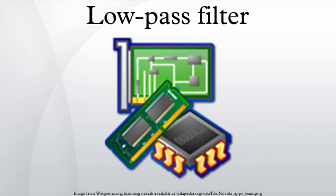An optical filter can correctly be called a low-pass filter, but conventionally is called a long-pass filter, to avoid confusion. As an acoustic example, a stiff physical barrier tends to reflect higher sound frequencies, and so acts as a low-pass filter for transmitting sound. When music is playing in another room, the low notes are easily heard, while the high notes are attenuated.